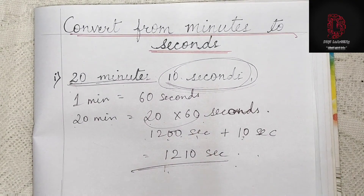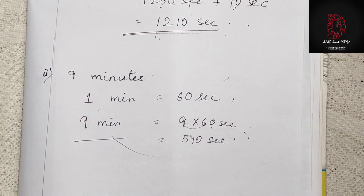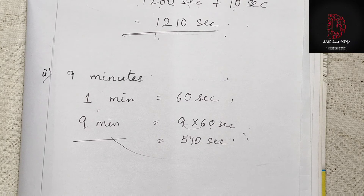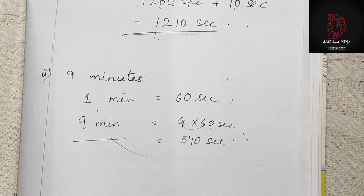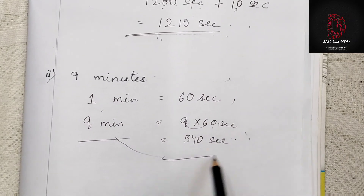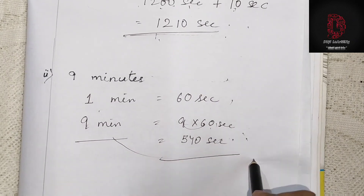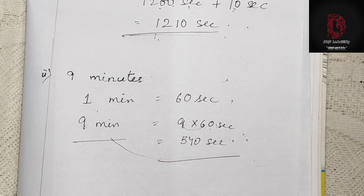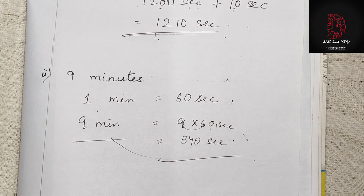In the second example, only 9 minutes were given — no seconds — so we only needed to convert 9 minutes into seconds. We did 9 into 60 and got the answer 540 seconds. I hope it's clear. Thank you for watching.